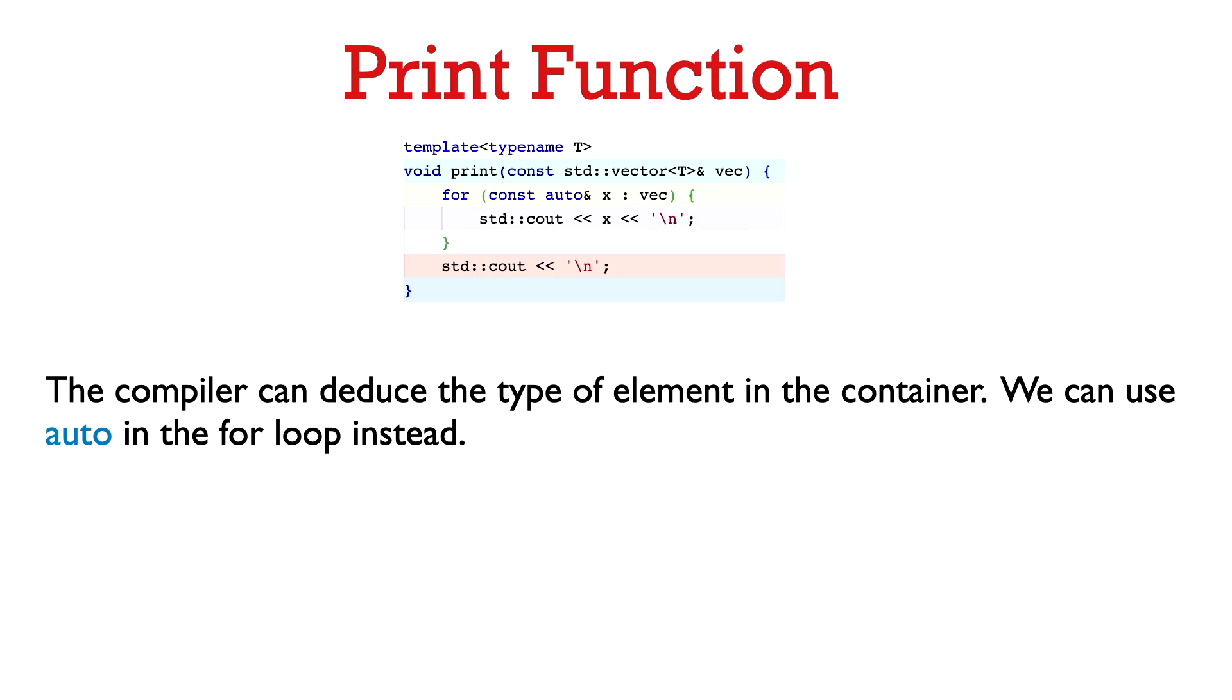Okay, so now in this range-based for loop, the compiler can actually deduce the type of the element in the vector. So we can actually, instead of using T there, we could just say auto. So auto is basically just saying, okay, compiler, you figure out yourself what the type of the element in the container is. So instead of saying for const T& x in vec, we can just say for const auto& x in vec.